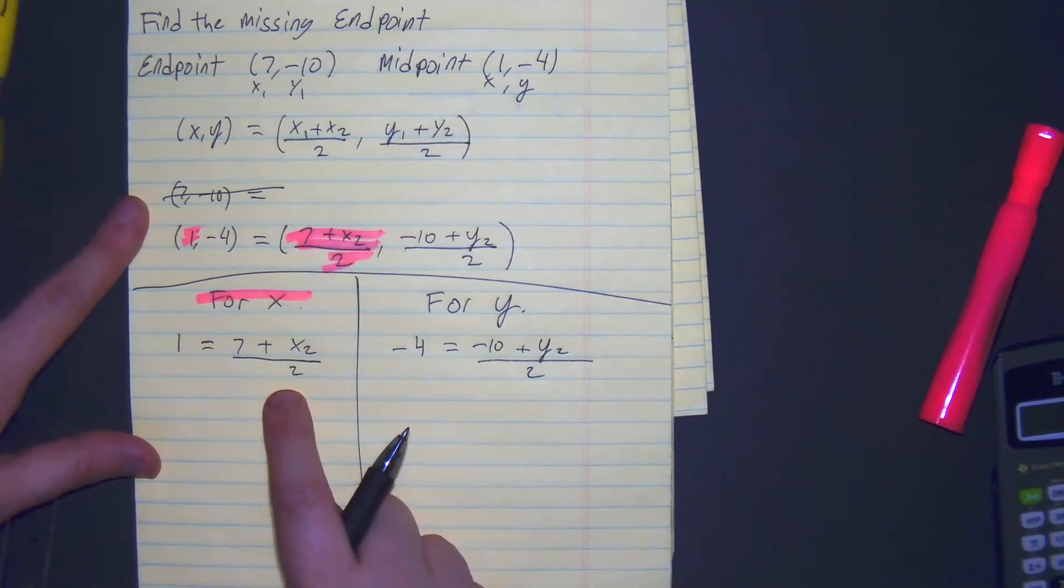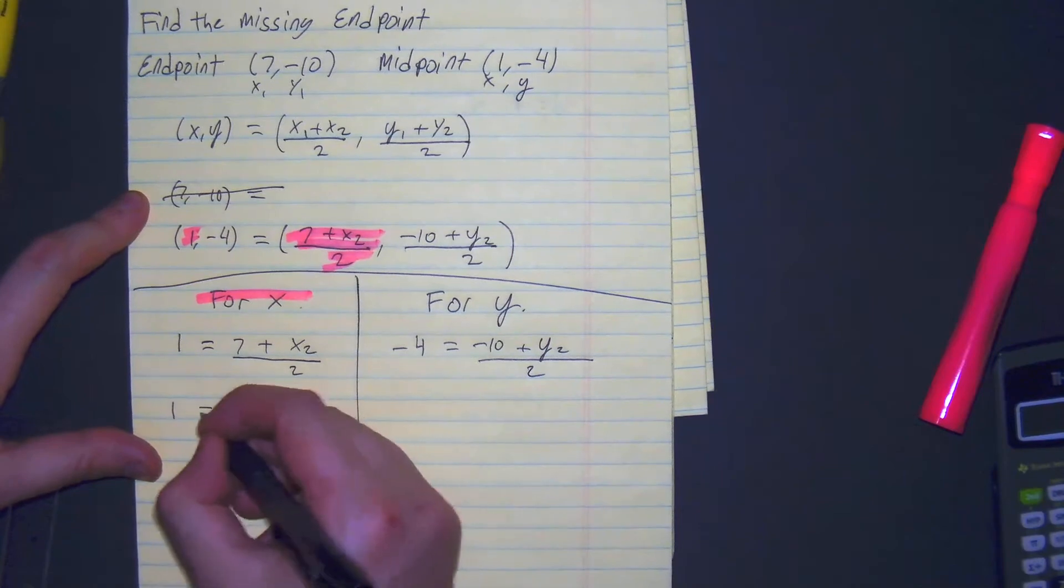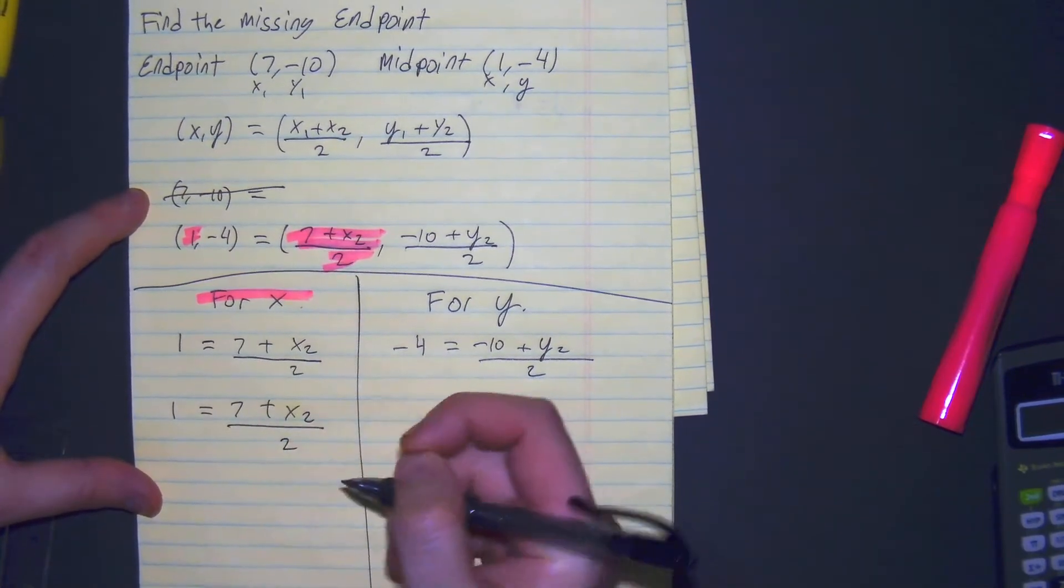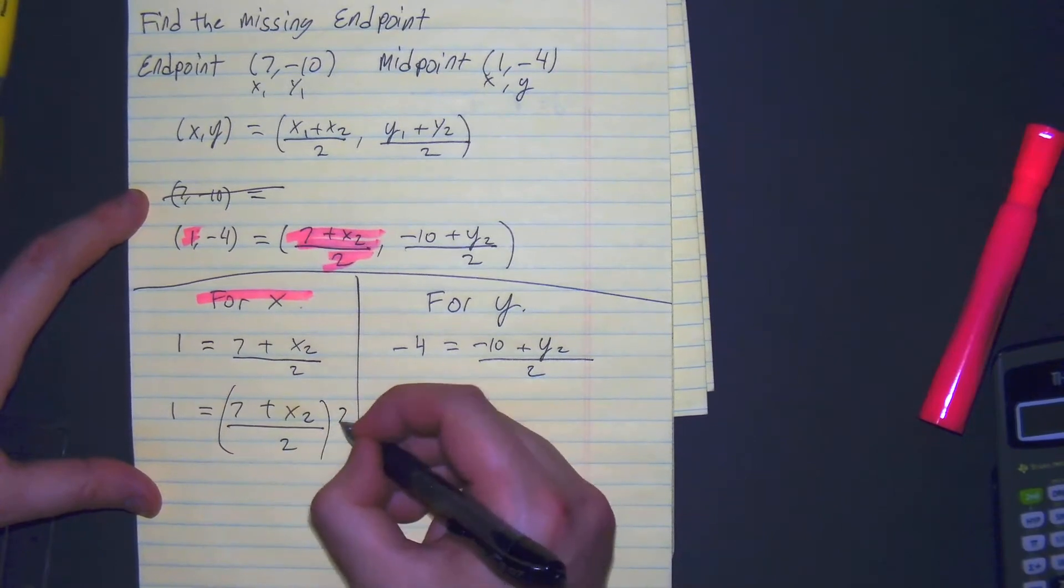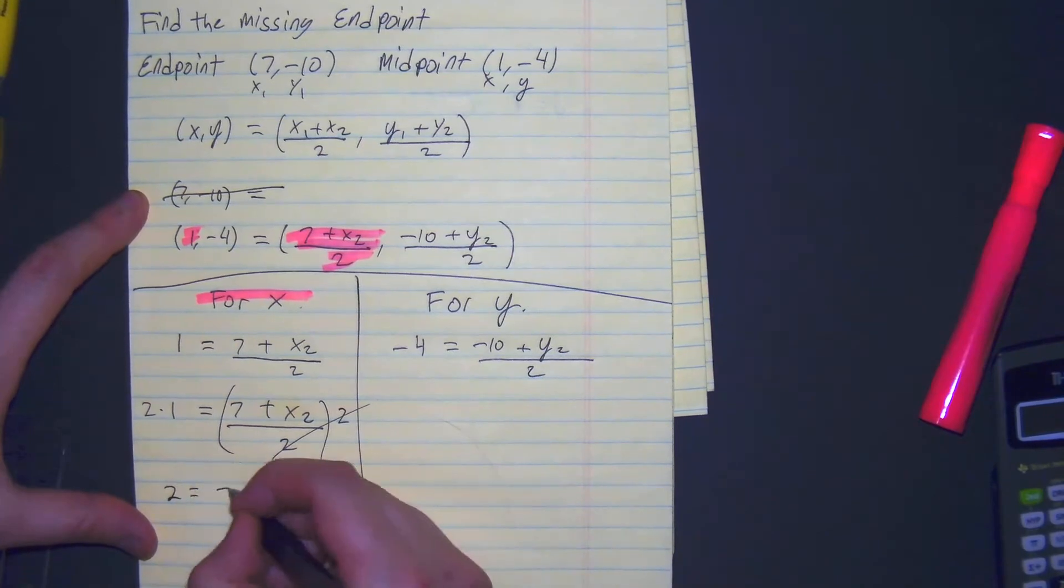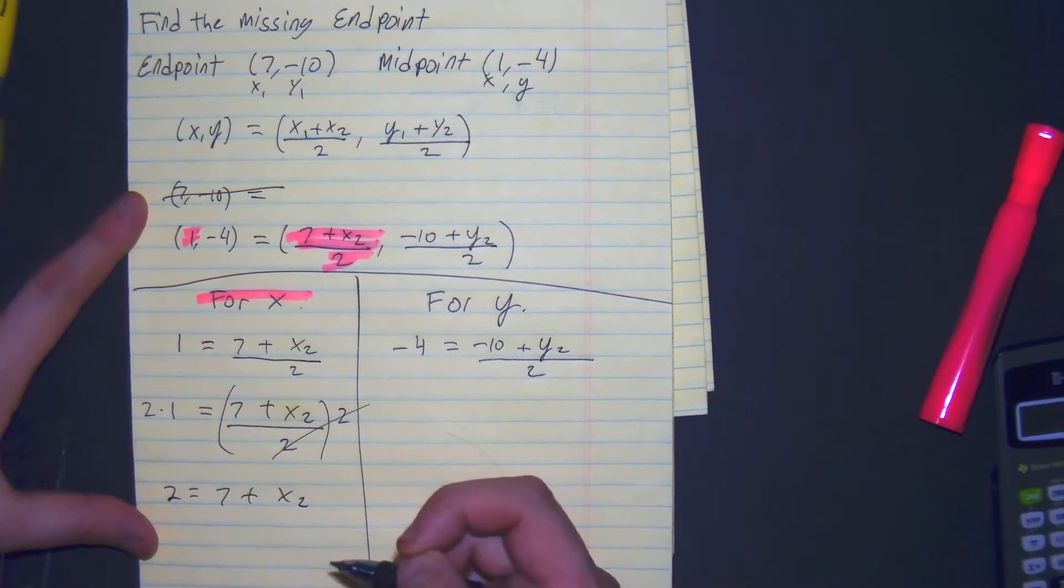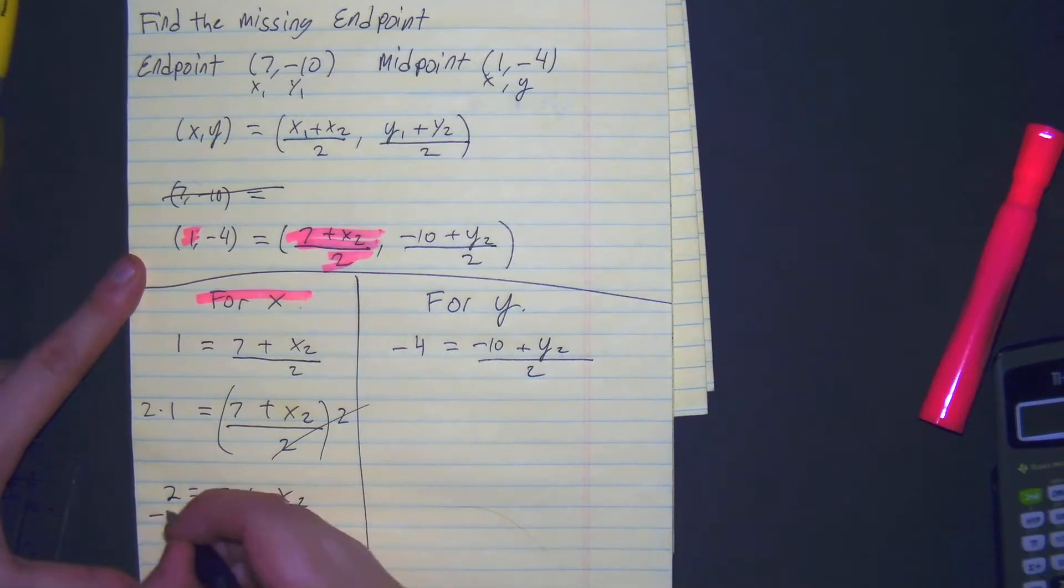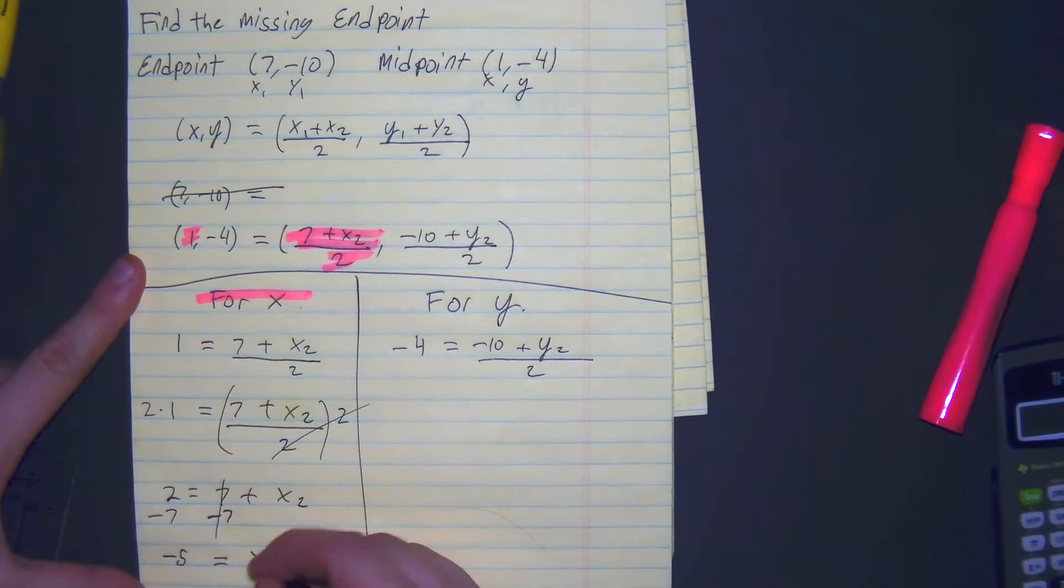From here, we're doing our inverse operations. So we need to get that denominator out of here. The way we get rid of denominators is through multiplication. So we have 2 is equal to 7 plus x2. Inverse of addition is subtraction. Negative 5 is equal to x2.